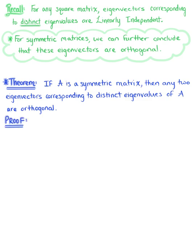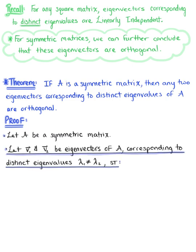So let's verify that this statement holds true. To begin, we let matrix A be a symmetric matrix. We also let vector v₁ and vector v₂ be eigenvectors of matrix A corresponding to distinct eigenvalues, so λ₁ cannot equal λ₂, such that we have the eigenvalue problems: A·v₁ = λ₁·v₁ and A·v₂ = λ₂·v₂.